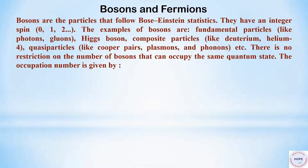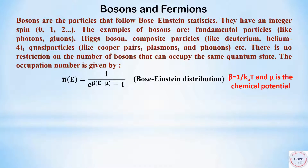The occupation number is given by this expression. Here beta is equal to 1 by kBT, kB is the Boltzmann constant, T is the absolute temperature, and mu is the chemical potential.